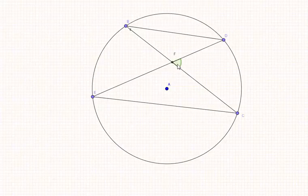You can see that we have the angle F here. This is the one we want to see for the theorem, the angle formed by two chords. We have triangle EFC already here highlighted for you.